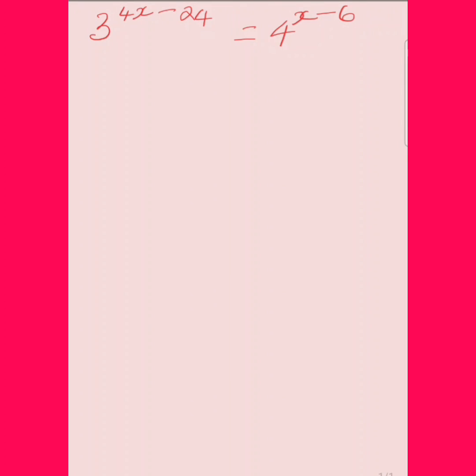Alright, let us take a look at this exponential equation. We have 3 to the power of 4x minus 24, which is equal to 4 raised to the x minus 6. The first thing I'm going to do is take a look at the left side.